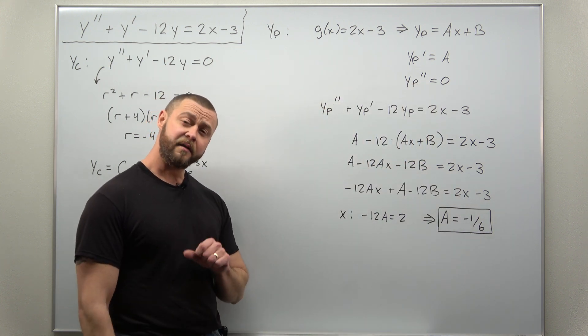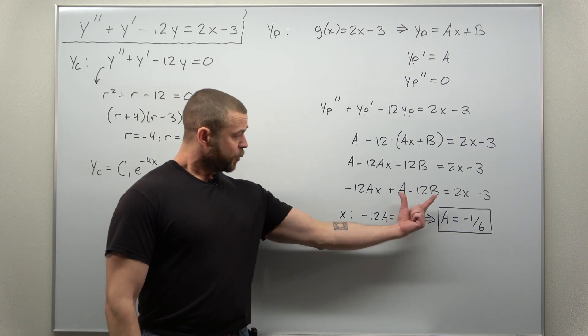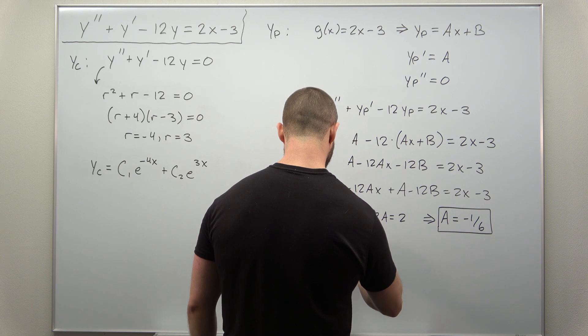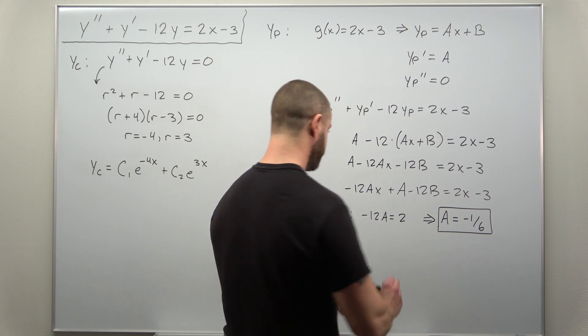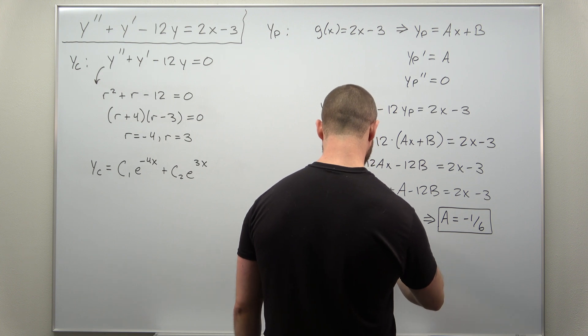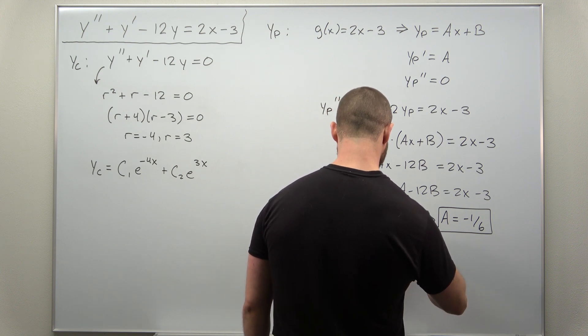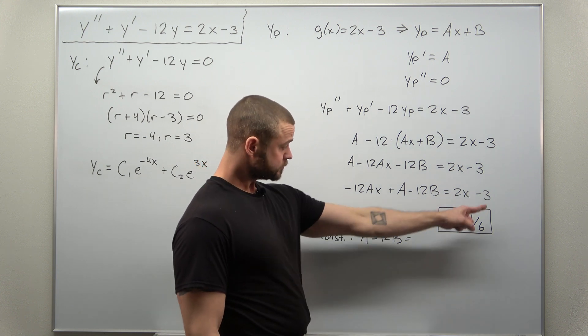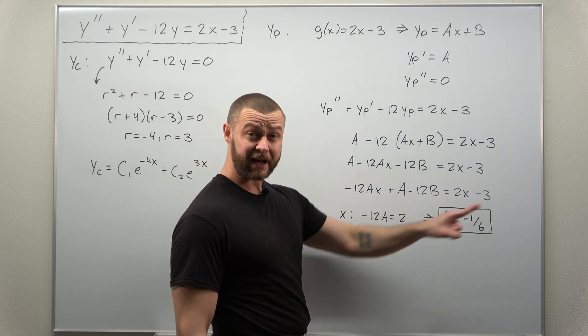To get the value for b, we look at our constant terms on the left side. That's a minus 12b. And that should equal the constant on the right side, which is negative 3.